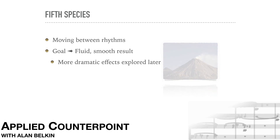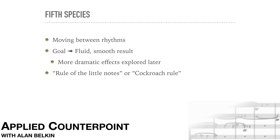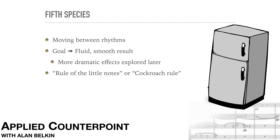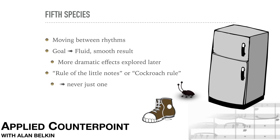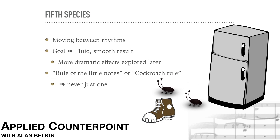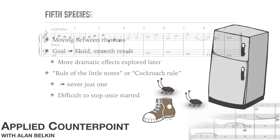The most important thing to remember about rhythm in fifth species is what Schoenberg calls the rule of the little notes, what I call the cockroach rule. There's never only one. Once we start introducing the quicker values — quarter notes for now — it's impossible to completely stop them without feeling that the music has lost its momentum. Here's an example.